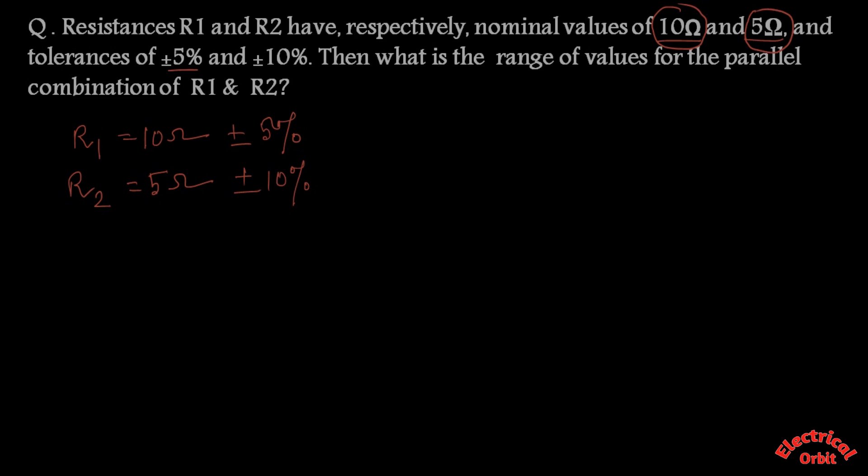10 ohm and 5 ohm are the true values, and what we measure by using an ohm meter or any other instrument is after including this 5% and 10% tolerance or variation. Then what is the range of values of the parallel combination of R1 and R2?